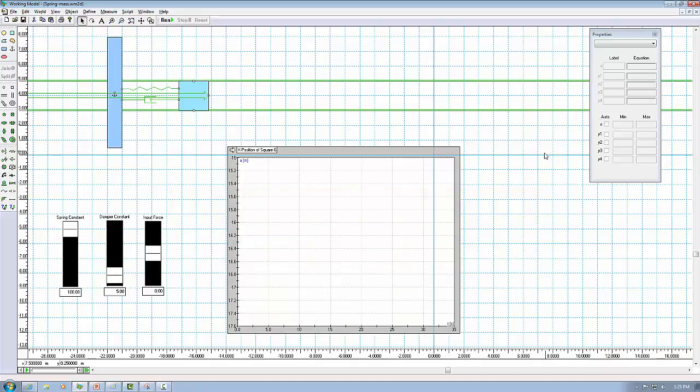The mass is 10 kg and the spring constant is 100 Nm as before. The damping coefficient is set to be 5 Ns per meter now.